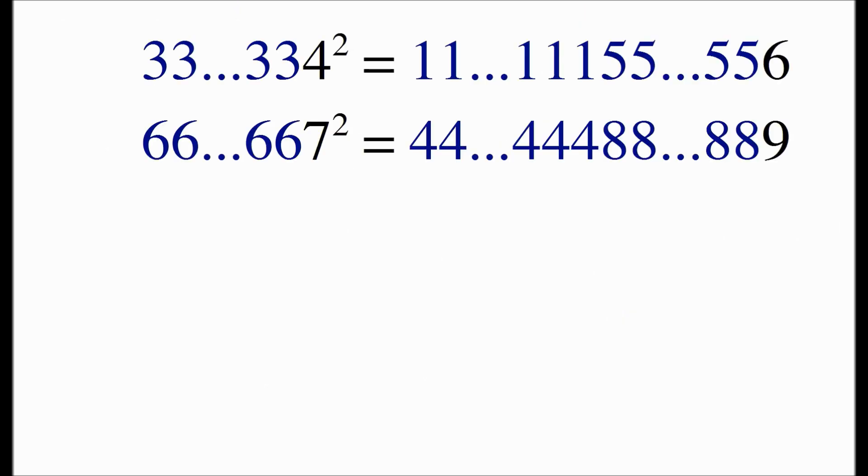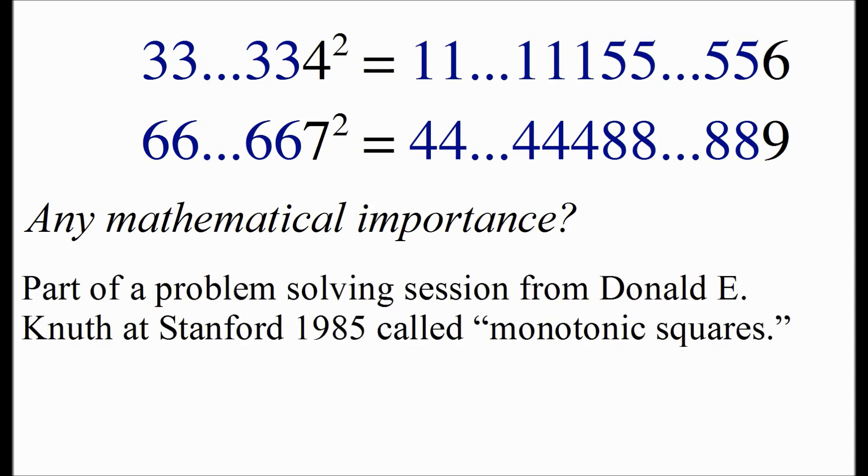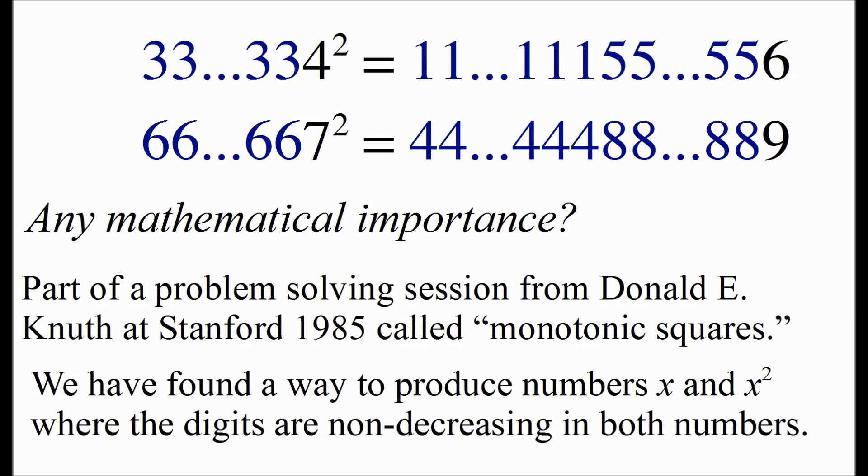A final question I'll ask in this video is, these are interesting formulas, but is there any mathematical importance to them? By way of history, these formulas came about at a problem-solving session from Donald Knuth at Stanford in 1985. He had posed a question of which numbers, x and x squared, are there, where the digits in both x and x squared are non-decreasing.